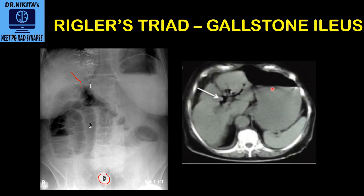Pneumobilia is very well seen on this CT scan. This is the liver, the organ on the right side. You see this air — we have seen that air looks black on X-ray and CT. You see this air in the biliary radicals, that is pneumobilia seen in gallstone ileus.